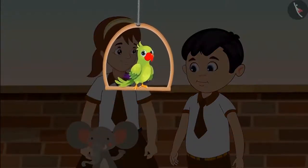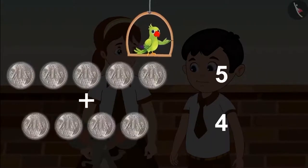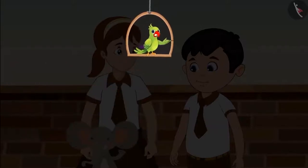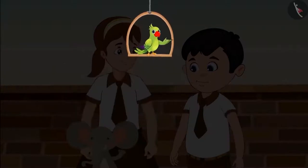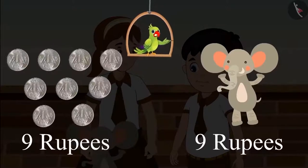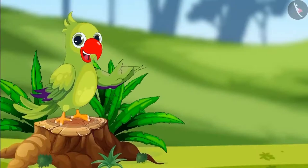Children, Chotu and Aarti both really like the stuffed elephant toy. But will they be able to buy that elephant? Come let's see. Chotu has five rupees and Aarti has four rupees. So together they have five, six, seven, eight, nine. We can also write it in an organized manner: when we add five rupees and four rupees, we get nine rupees. Chotu and Aarti together have nine rupees, and the elephant also costs nine rupees. So they bought the stuffed toy. That is all we have for today.